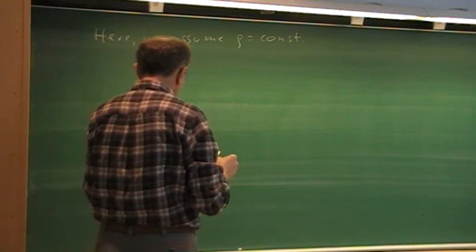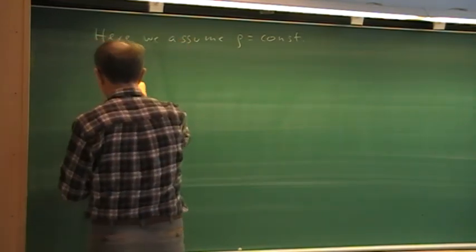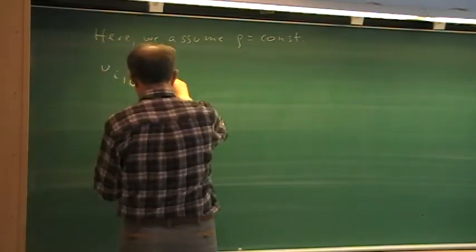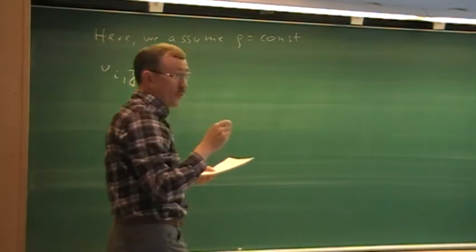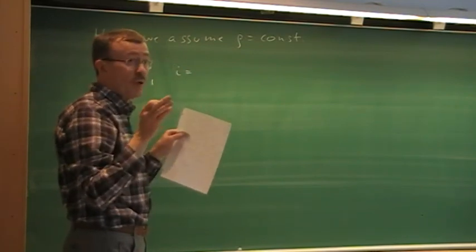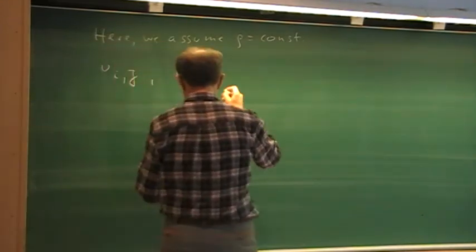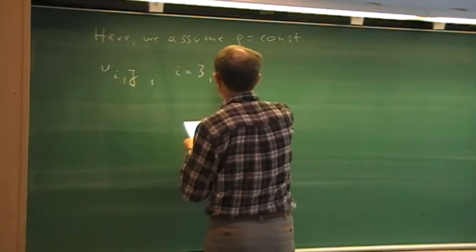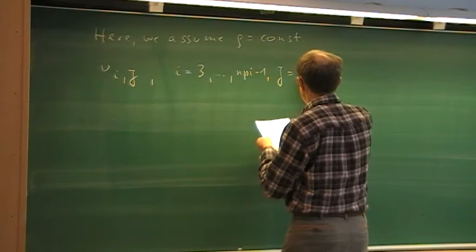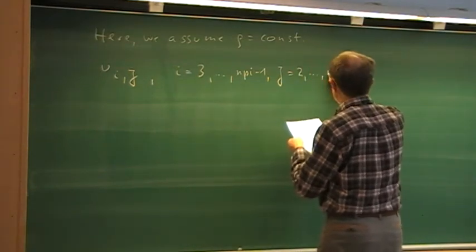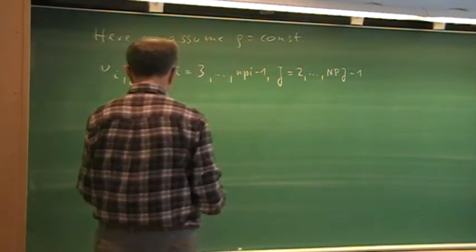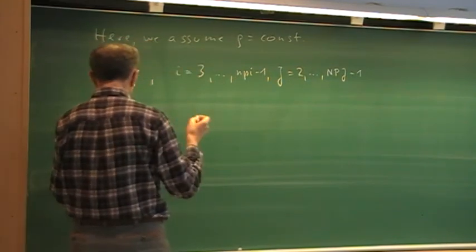The velocity components in the x-direction, u, that we have learned are denoted now in this way. They are determined — referring to the notation introduced here — for i equal to 3 to nPi minus 1, and capital J from 2 to nPj minus 1. These velocity components are determined by the x-momentum equation, as we shall see.